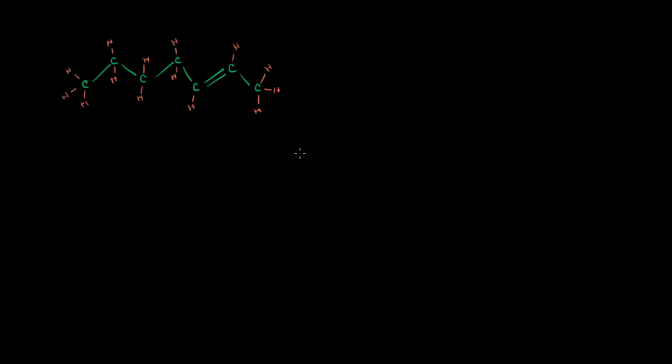So like we always do, let's try to find the longest chain of carbons, and there's only one chain of carbons here. There's one, two, three, four, five, six, seven carbons in that chain. So we're going to be dealing with hept, that is seven carbons.